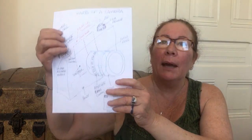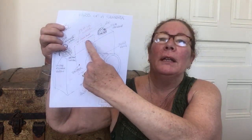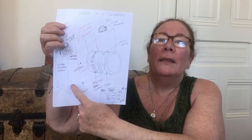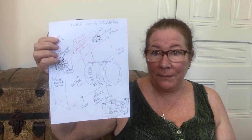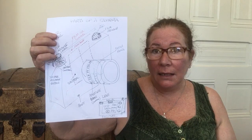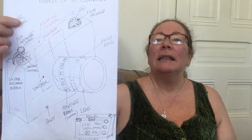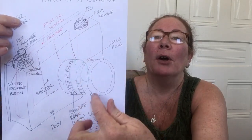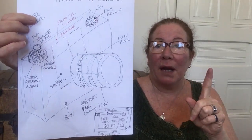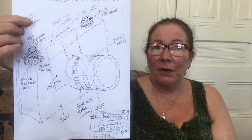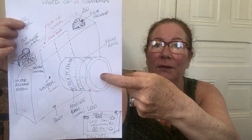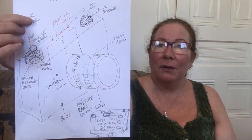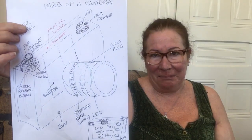The first part of the camera you want to know about is called the body. The body is this part here — that's the part that all the pieces are in. When you're looking at a camera, you can see that the body is this kind of boxy part. That's part number one. The second part you need to know is the lens — there's the lens right there. Those are the two basic parts of a camera.